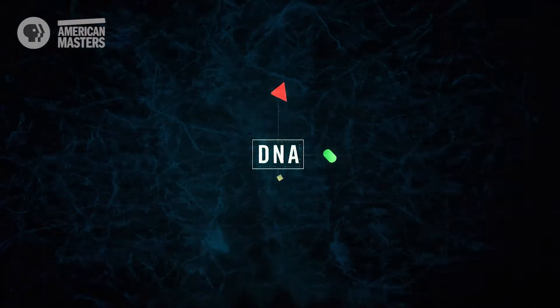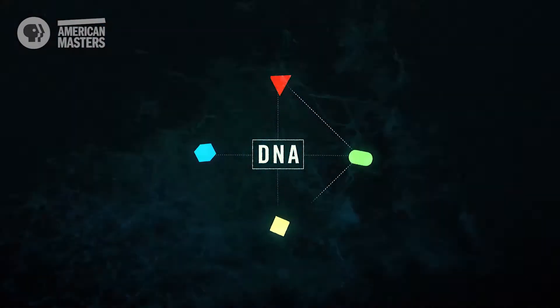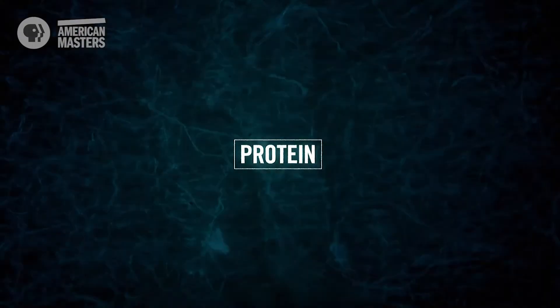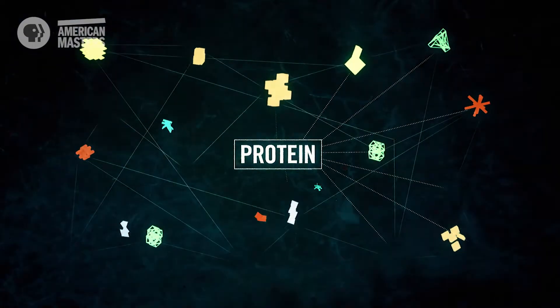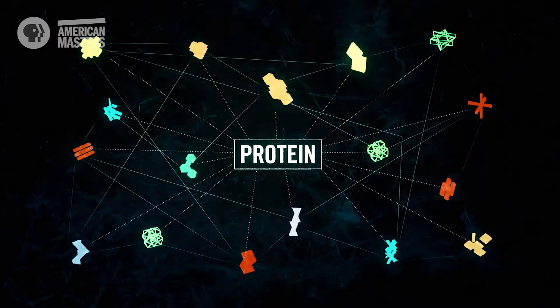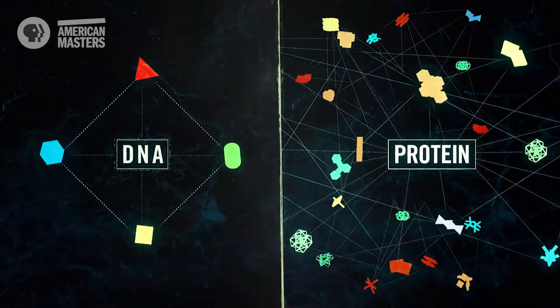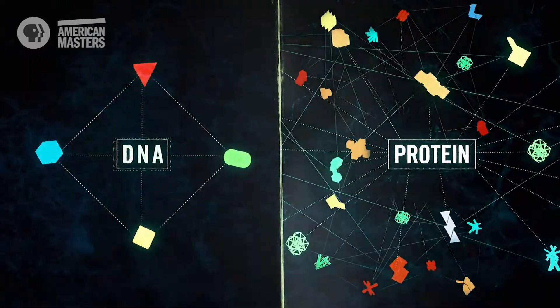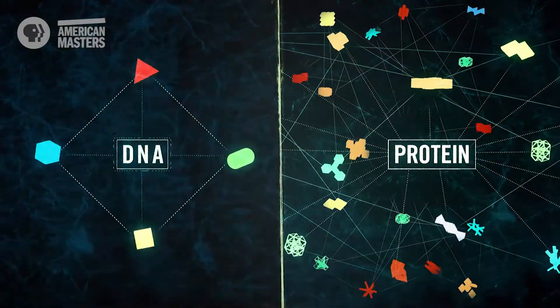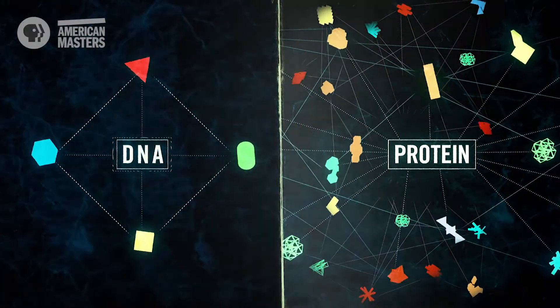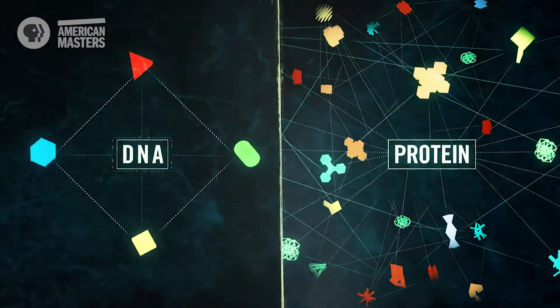Around the turn of the century, a number of people studied the biochemistry of DNA and found out that it has these four subunits. Protein has 20 or more different building blocks. So it seemed obvious that protein was a more complicated molecule, and so probably it was the material of the gene.